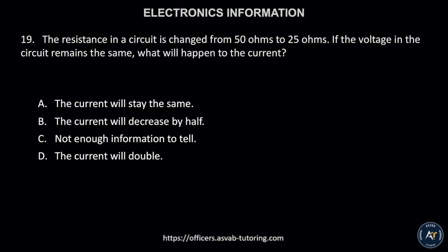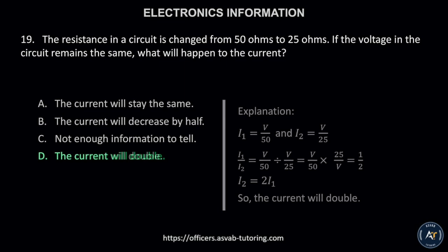Number 19. The resistance in a circuit is changed from 50 ohms to 25 ohms. If the voltage in the circuit remains the same, what will happen to the current? A. The current will stay the same, B. The current will decrease by half, C. Not enough information to tell, or D. The current will double. The correct answer is letter D, the current will double. The solution is shown.